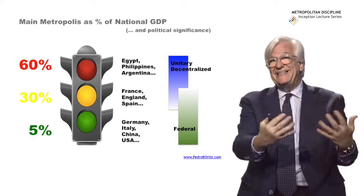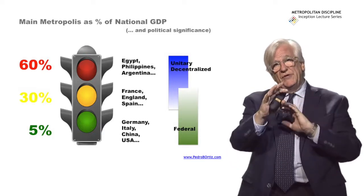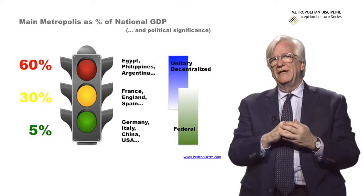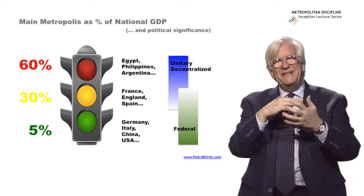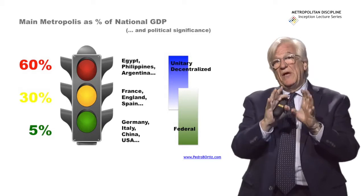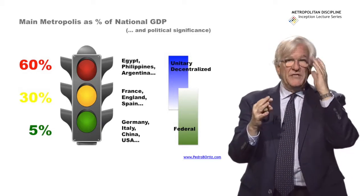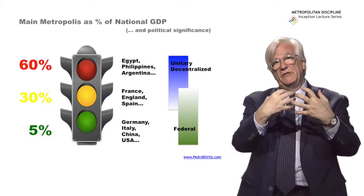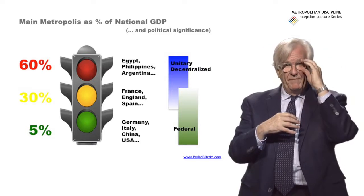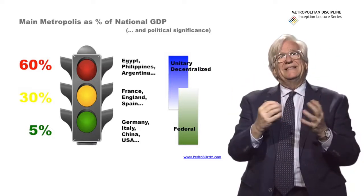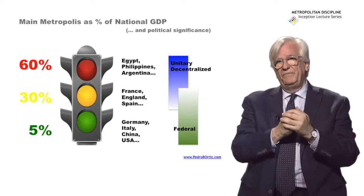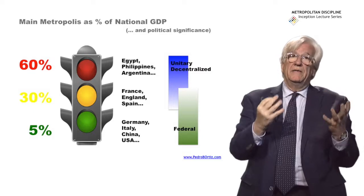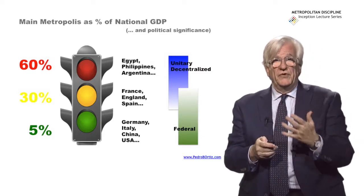So a president doesn't want to create a setting where that power can take place. In other nations where the main metropolis represents around 30% of GDP — Paris, London, Madrid, Barcelona — there is a possibility of delegation and some kind of representation. And in countries where the main metropolis is only 5% of GDP, it is easier to give those metropolises a unified government, since they do not jeopardize national presidential power. That is the case of China and Germany, which already has federalization of metropolises — Bremen, Hamburg, and Berlin already have state-level power — and also Italy.